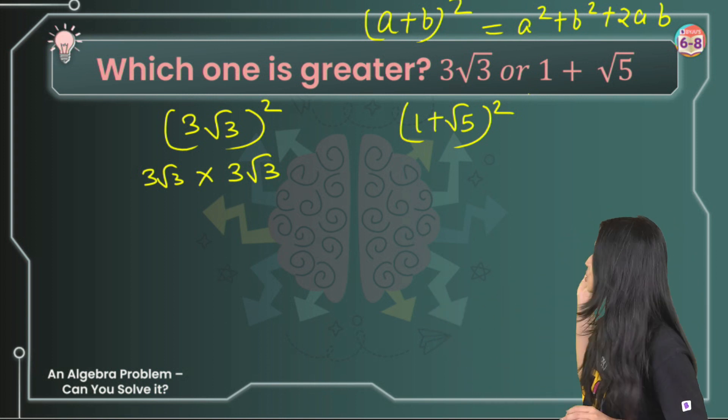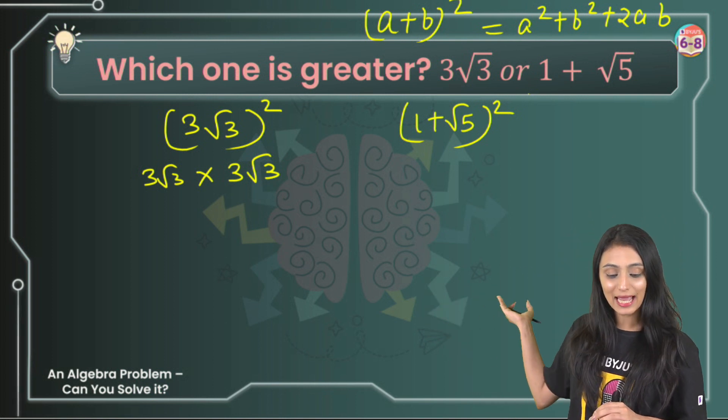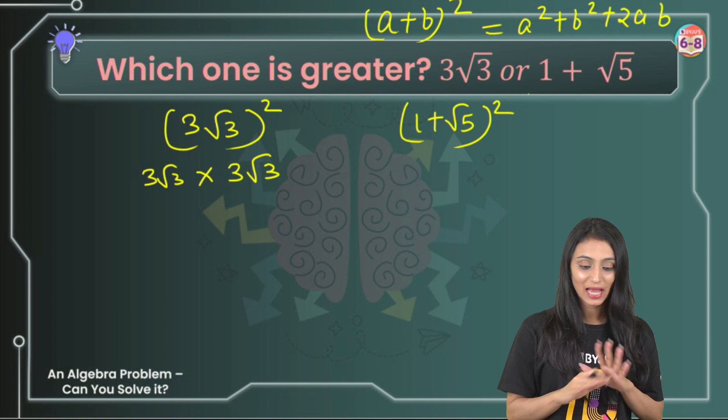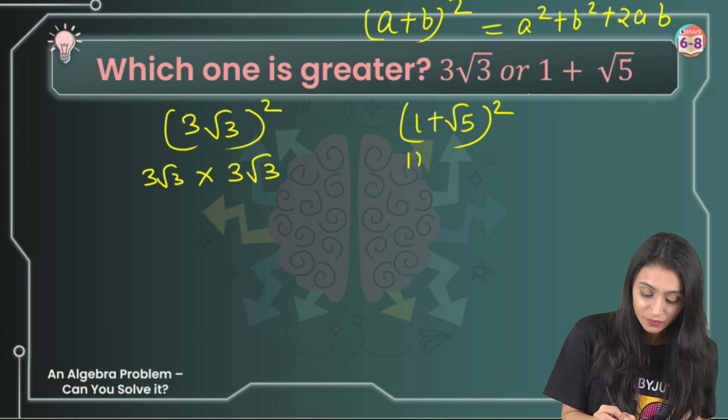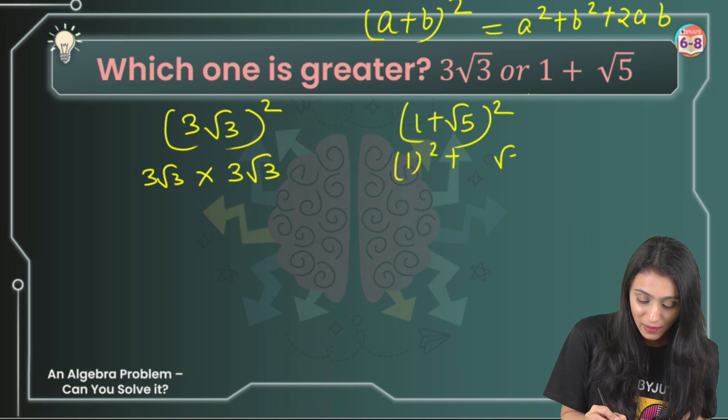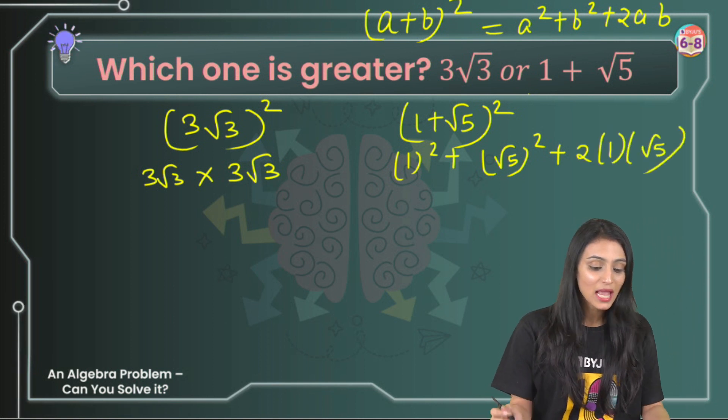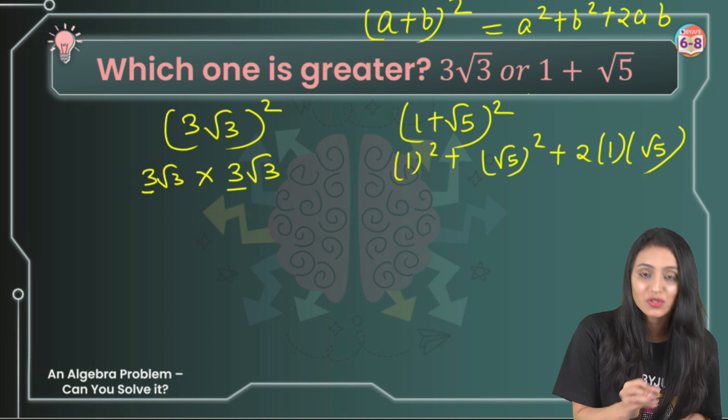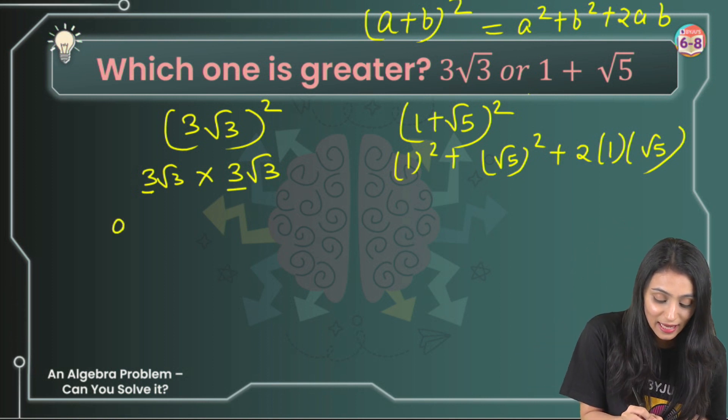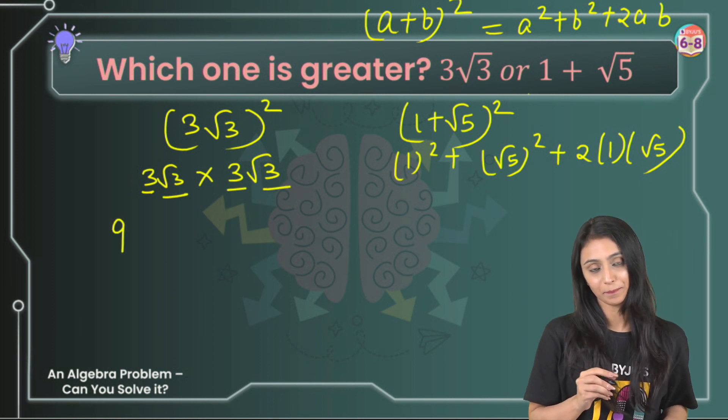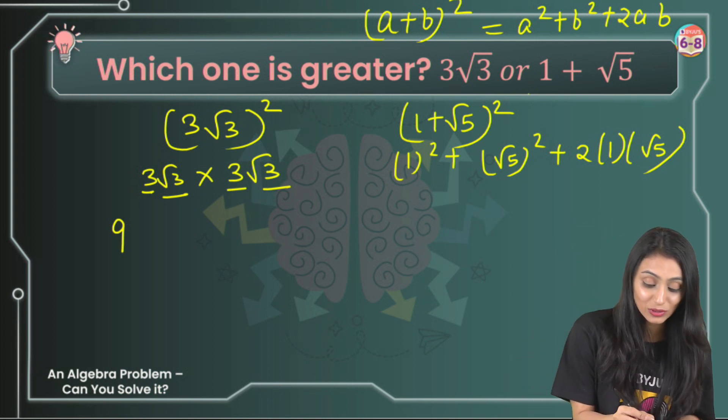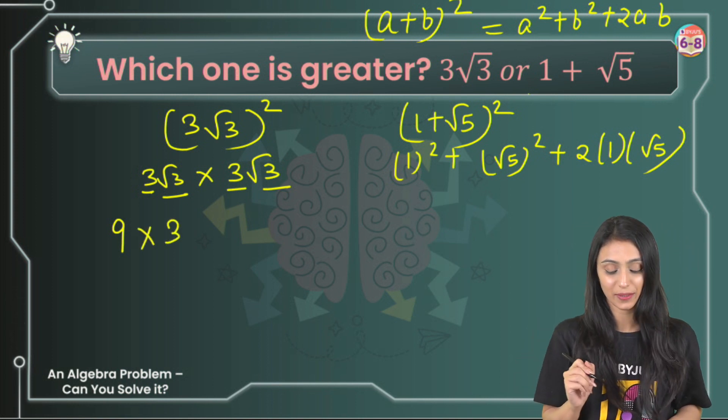In this question, 1 is representing a and √5 is representing b. I'll simply apply this identity here. This is going to be 1²+(√5)²+2(1)(√5). Now 3×3 is 9 and √3×√3 gives you 3. So 9×3.